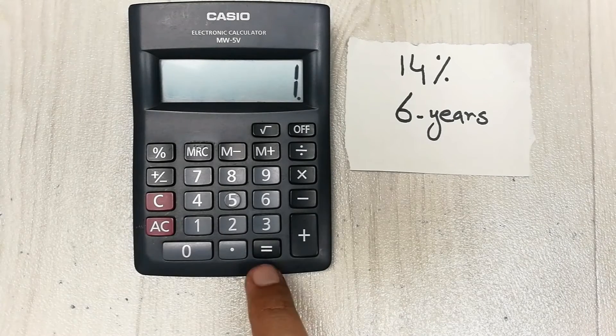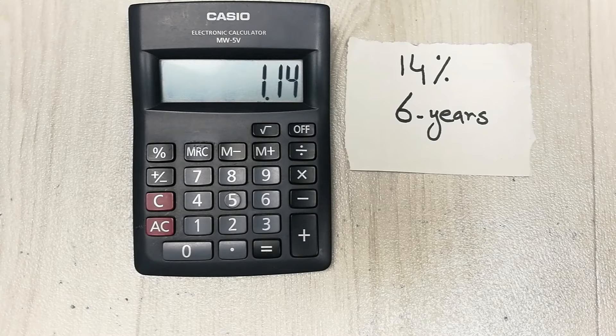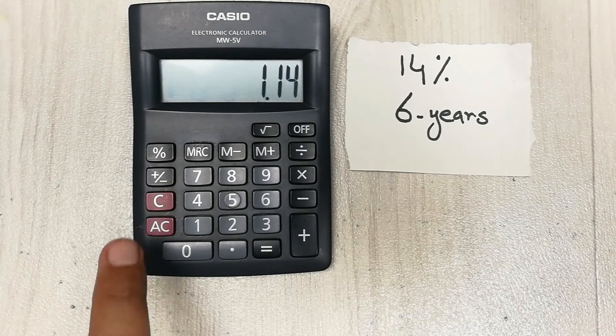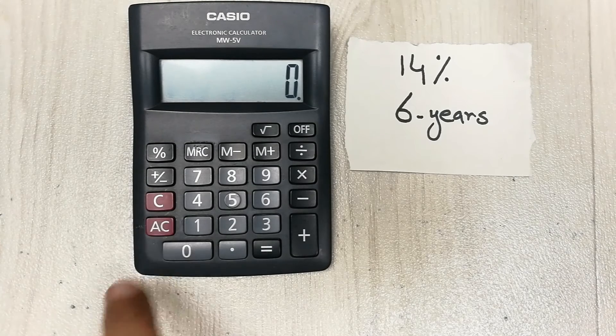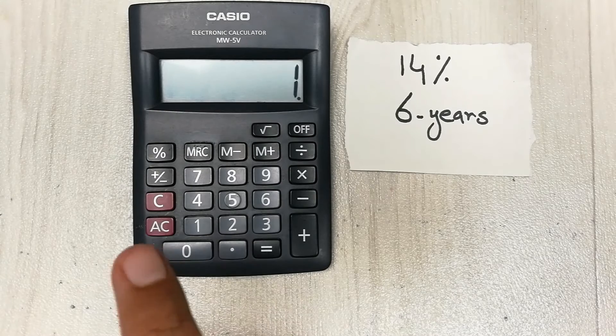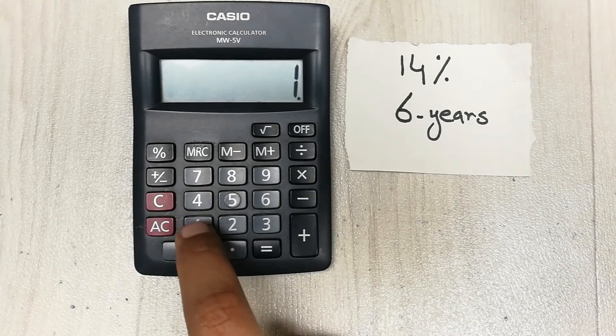In the third step, we clear it and we divide 1 with that 1.14. So 1 divided by 1.14.